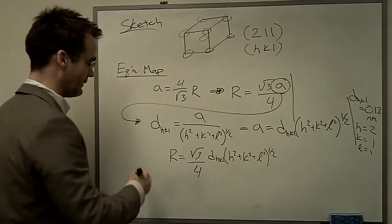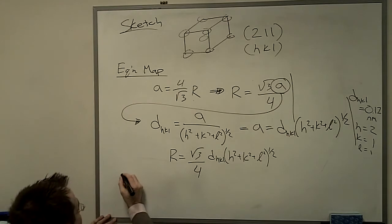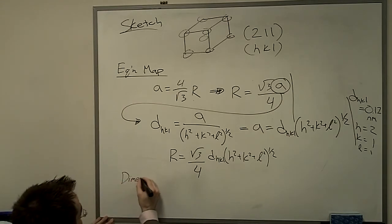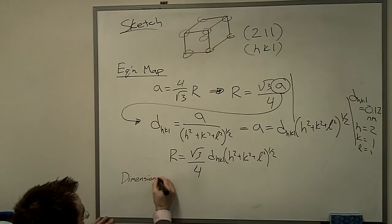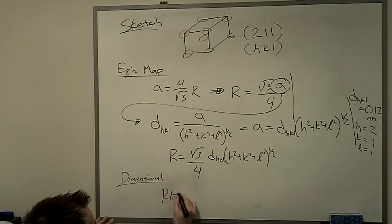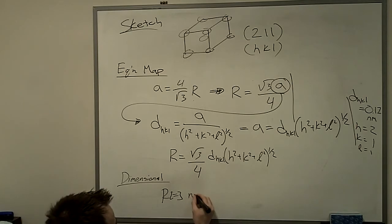OK, the last thing I'll do before we solve is the dimensional analysis. Just a simple one. Radius is going to have units of dimensionless, dimensionless. d_HKL has units of nanometers.